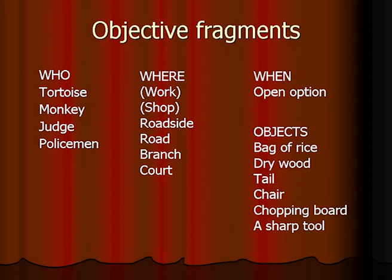When is difficult to decide — it's an open option, so you have a lot of possibilities to create the 'when' in whatever way you want. As for objects: the reason they are important is that most conflicts can actually appear around objects — in this case it is very, very clear. So you have the bag of rice, the dry wood the tortoise collects in the forest, the tail, a chair, a chopping board, and probably a sharp tool because the tail is cut off.